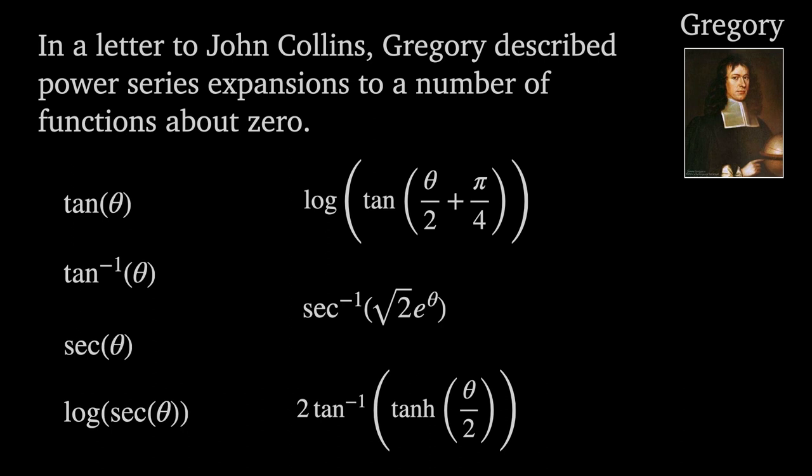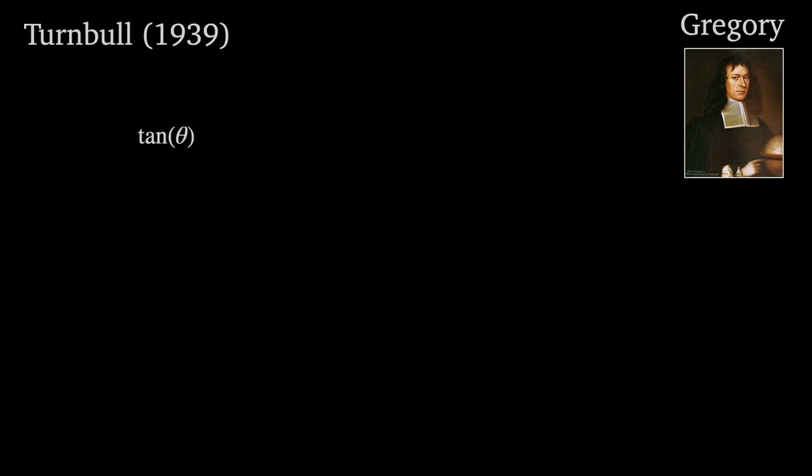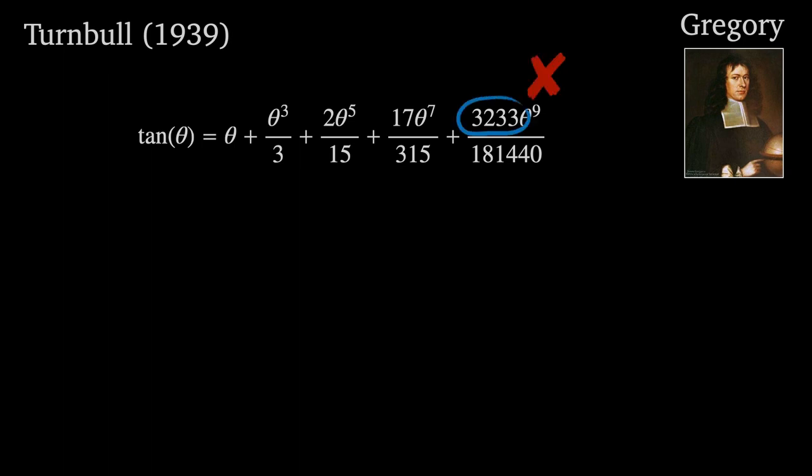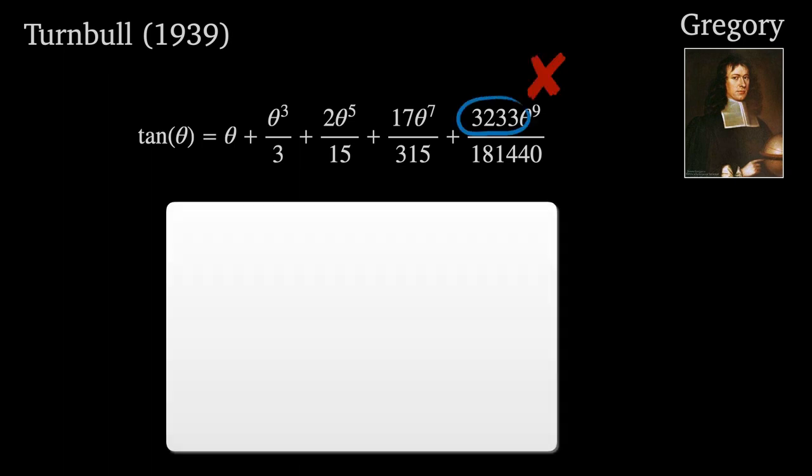Now, on its own, this isn't proof he knew the general formula for any given function, but Turnbull went further. Turnbull went through Gregory's notes meticulously, demonstrating that Gregory was producing calculations exactly as if he was using Taylor series. He even showed how an error in Gregory's power series expansion of tan theta had come from him accidentally writing 27 instead of 272 in the calculations involving the 6th and 7th order derivatives.